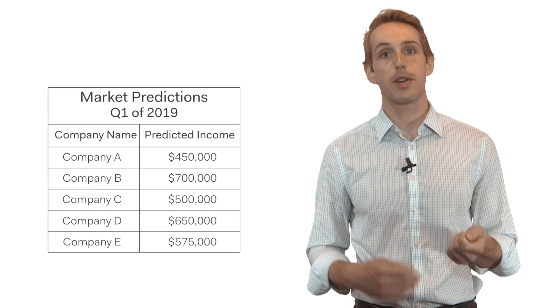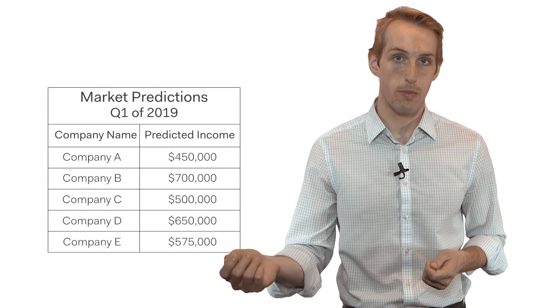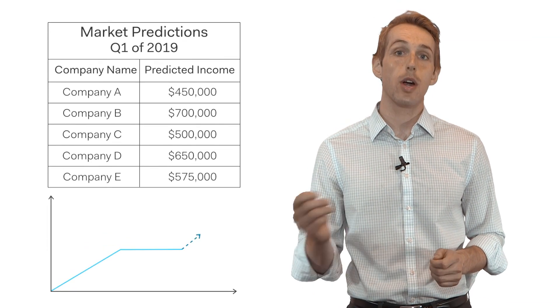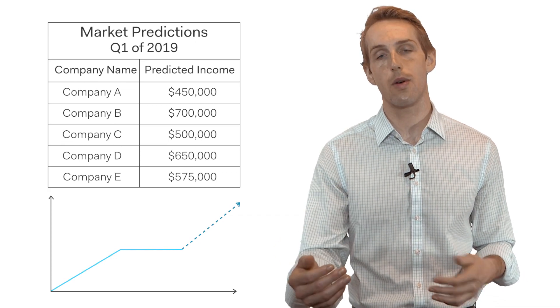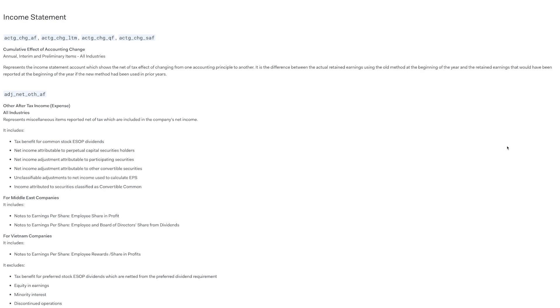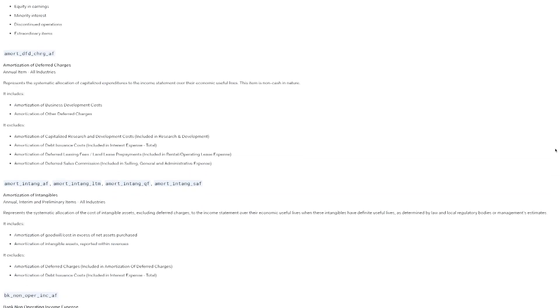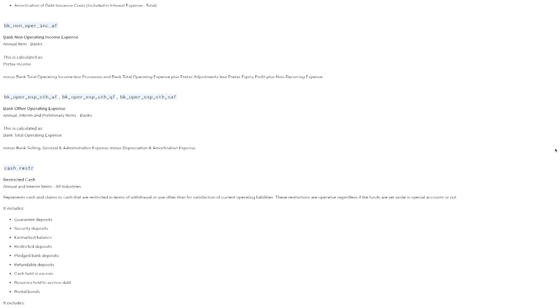Investors will often make estimates or predictions about the earnings that a company ultimately will report. These predictions affect the market's view of a company before it officially releases its earnings at the end of a quarter or a year. On Quantopian, the Factset Fundamentals dataset contains a number of fields derived from the income statement, such as earnings per share. Additionally, the Factset Estimates dataset contains information on analyst estimates. Using these two datasets, you could seek to create a strategy that predicts a company's earnings before they actually report them, and look to find when a company could surprise or disappoint the market.